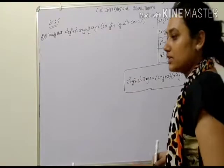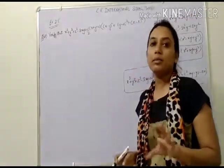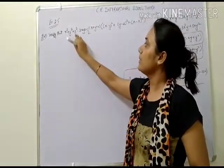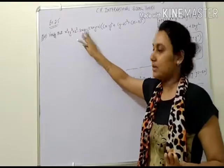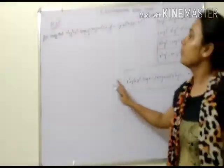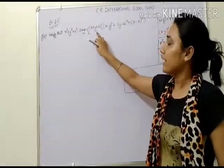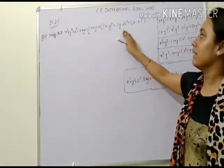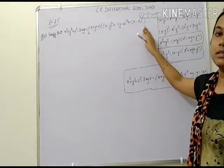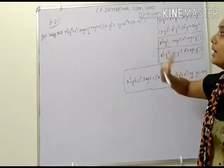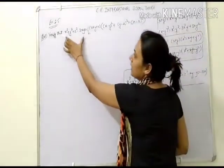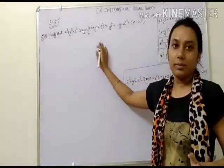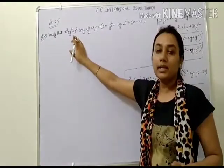Now the next question: verify that x cubed plus y cubed plus z cubed minus 3xyz equals one-half into x plus y plus z, into x minus y whole squared plus y minus z whole squared plus z minus x whole squared. We need to prove LHS equals RHS. In the LHS there is no term we can simplify with a formula, so we will solve the RHS.